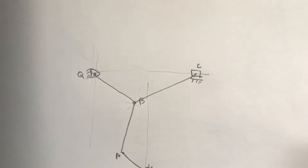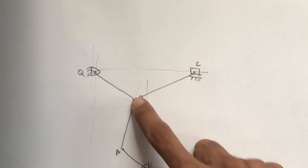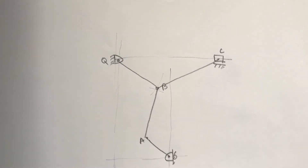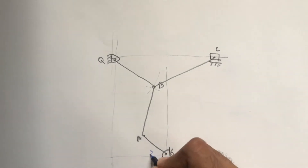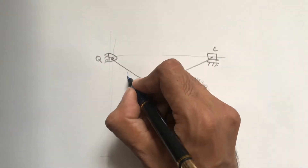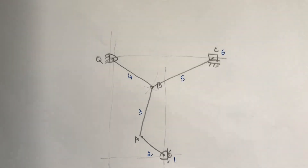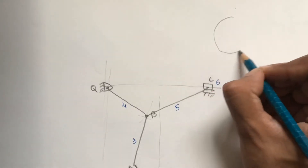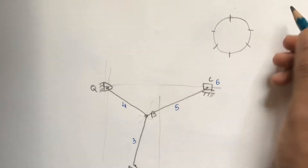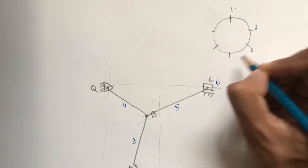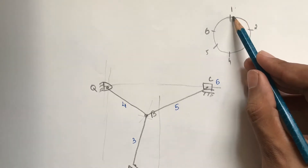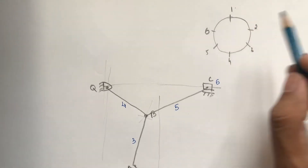Our question is to find velocity of points B and C and angular velocity of links AB, BQ, and BC. For the instantaneous center method, first write link numbers: link 1 is the fixed link, then 2, 3, 4, 5 (binary), and 6 (slider) — total six links. Draw a circle and divide it into six parts (arbitrary radius).